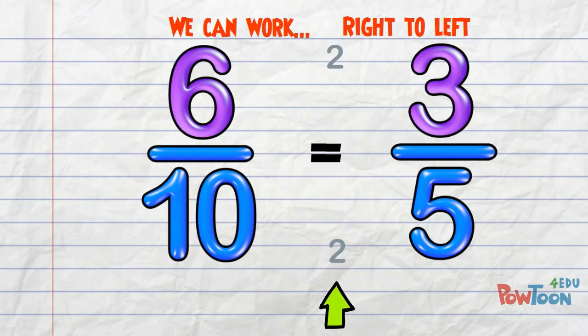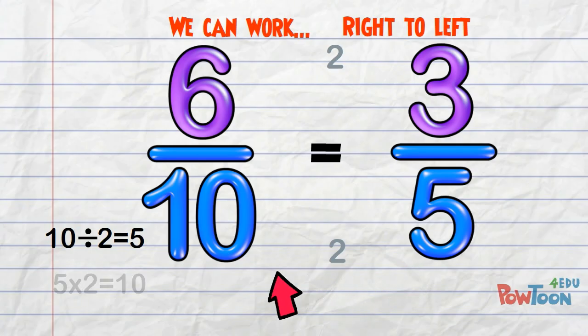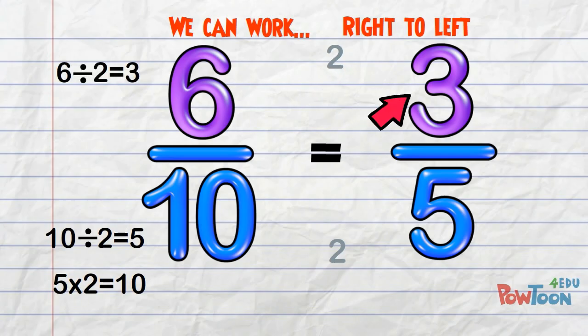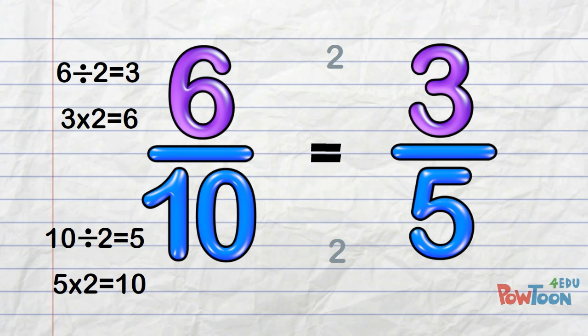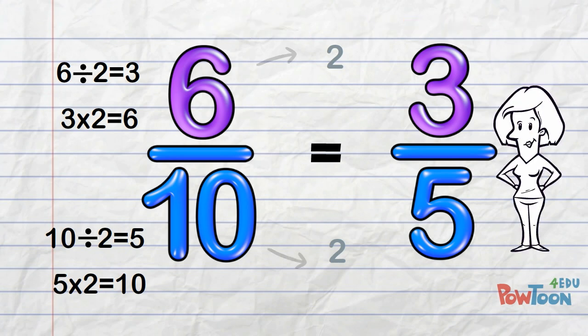You can check it back like this: 10 divided by 2 is 5, and 5 times 2 is 10. 6 divided by 2 is 3, and 3 times 2 is 6.